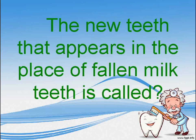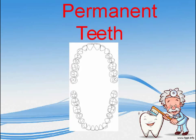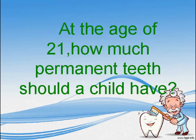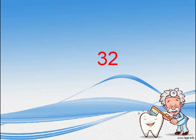The new teeth that appear in the place of fallen milk teeth are called? Permanent teeth. At the age of 21, how many permanent teeth should a child have? Thirty-two.